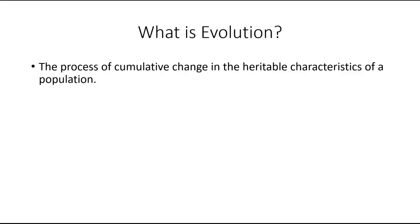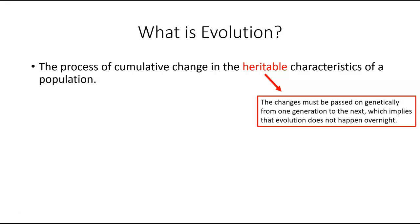Let's dive in. First we have to understand what evolution means by definition. Evolution is the process of cumulative change in the heritable characteristics of a population. Heritable means that the changes that happen within a particular species have to happen genetically — there is a genetic change within a population of organisms that happens one generation at a time. Those small cumulative changes allow a species to become better fit for their environment, allowing them to reproduce at a higher rate and increase their fitness, and those traits are therefore passed on.